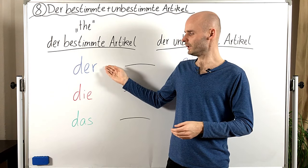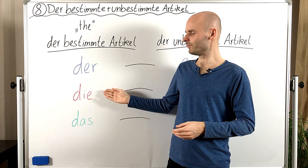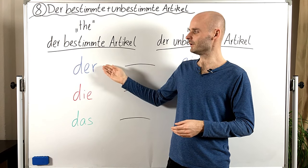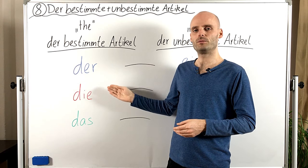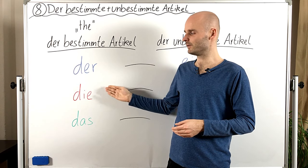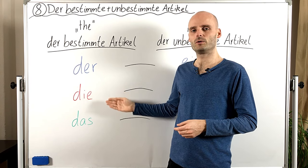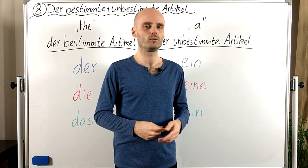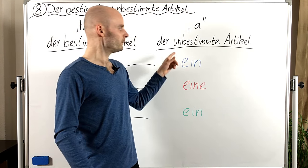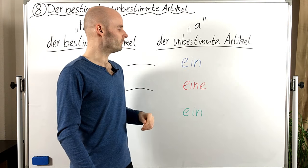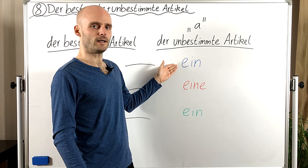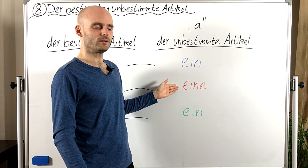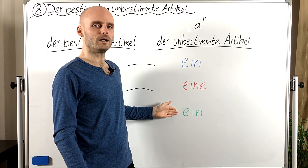Wir haben Maskulin, Feminin und Neutral. Maskulin ist 'der', Feminin ist 'die' und Neutral ist 'das'. Und für den unbestimmten Artikel haben wir Maskulin 'ein', Feminin 'eine' und Neutral 'ein'.